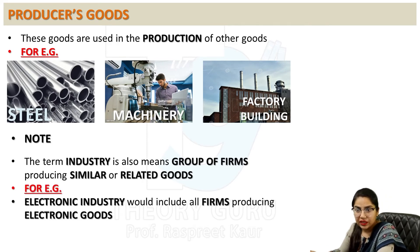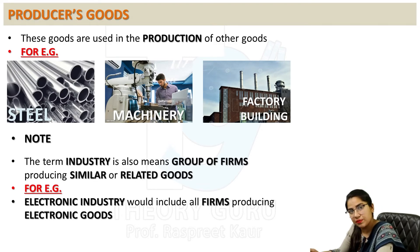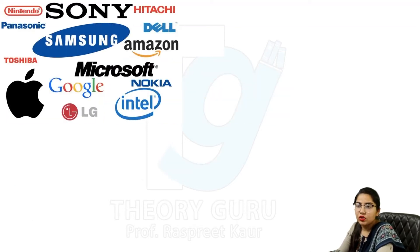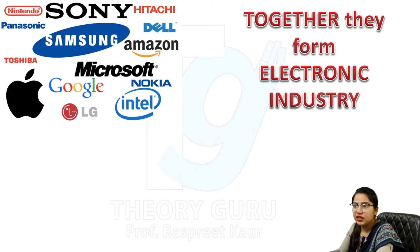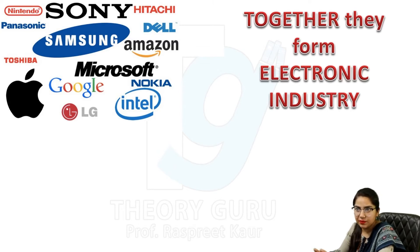For example, what is the electronic industry? All the firms that are producing electronic goods — Sony, Hitachi, Amazon, Dell, Nokia, Intel — all these firms are producing electronic goods, and when we combine all of them together, these form the electronic industry.